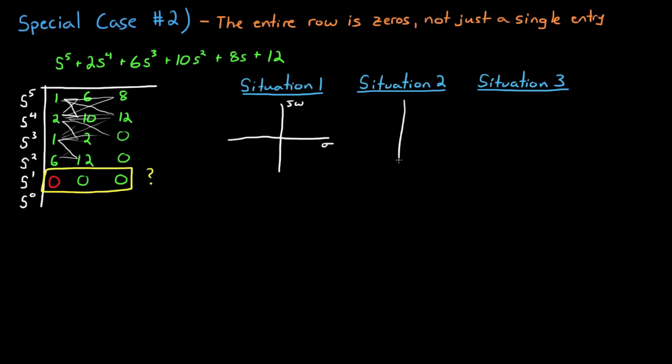When you come across this, it means that you have a polynomial with roots in one of three situations. Either you have two real roots that are equal and opposite in sign, you have two imaginary roots that are complex conjugates of each other, or you have four roots that are all equal distant from the origin.